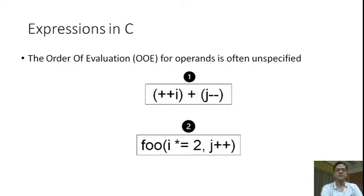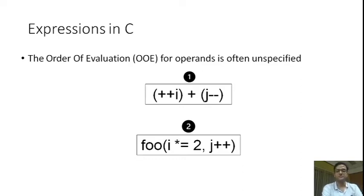Consider the first expression: plus-plus i plus j minus-minus. The side effect induced by j minus-minus may occur before or after the increment of i. In fact, the two side effects may proceed in parallel. Similarly, consider the second example, which involves a call to function foo with two arguments, each involving a side effect. The two side effects may proceed in either order or concurrently.